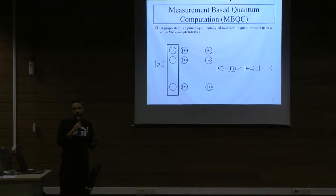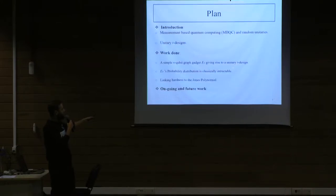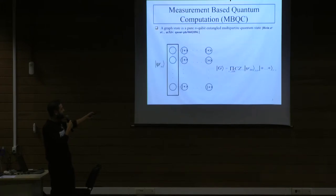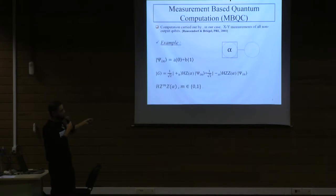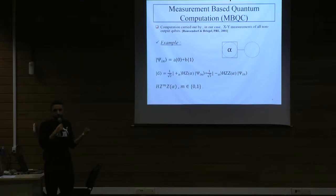An example of the most commonly used measurement-based quantum computing resource is the cluster state, which has the shape of a lattice. A subset of the qubits is defined as the input with input state psi_n, which we imprint on it, and all the other non-input qubits are defined as in the plus state. We prepare preparation entanglements — these horizontal and vertical lines — in order to create this lattice state. You can in principle implement any unitary if you perform your measurements and have some sort of corrective strategy.